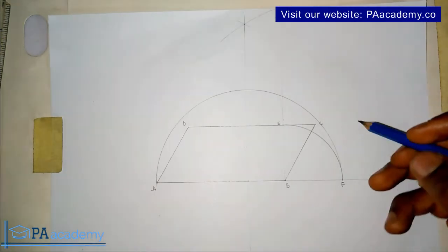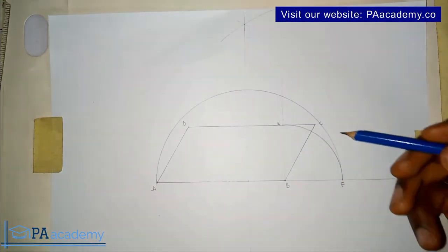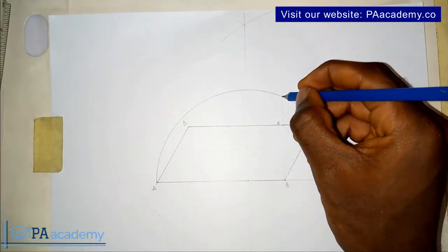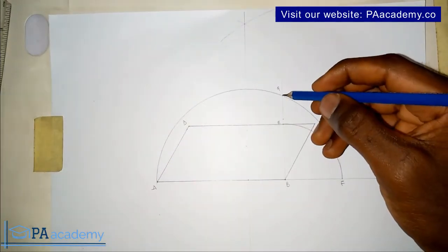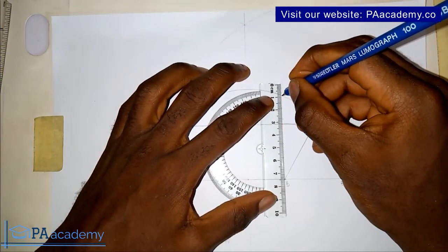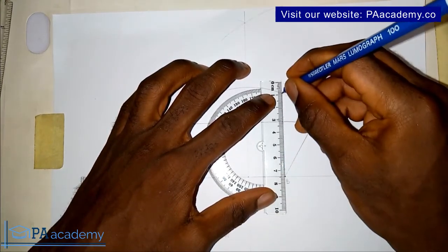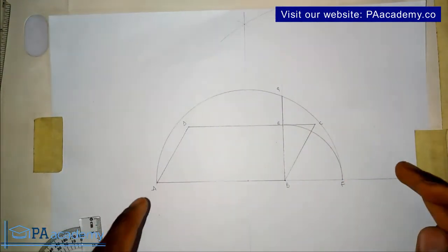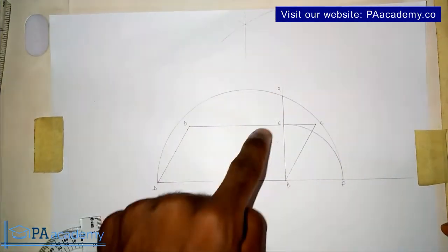The semicircle is touching the perpendicular line we drew earlier. It touches the perpendicular line at point G. This line GB represents one side of the square whose area is equal to the area of the given parallelogram.